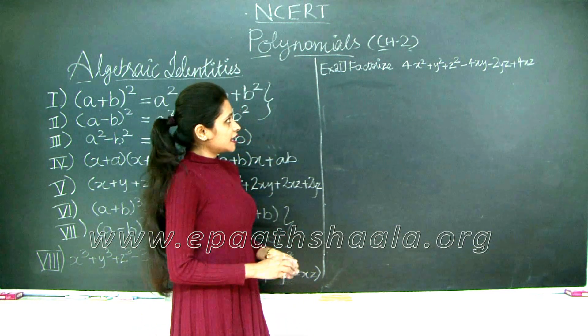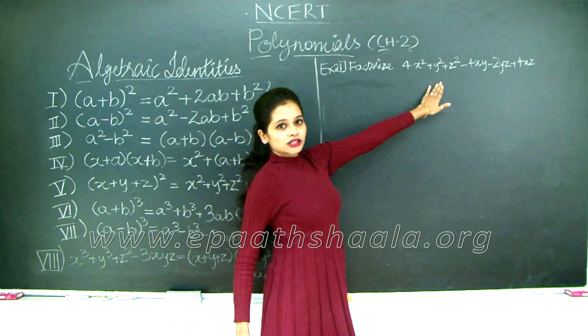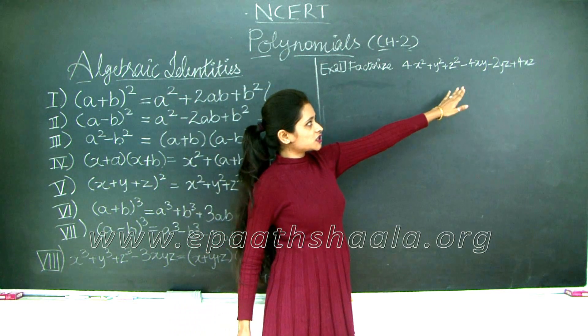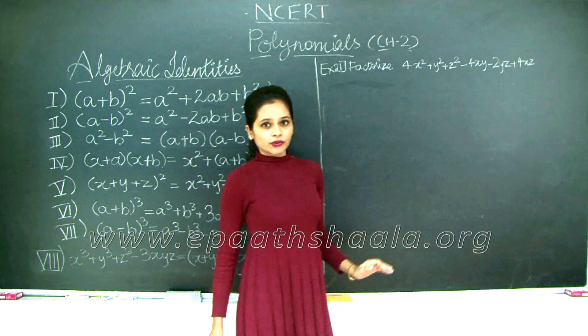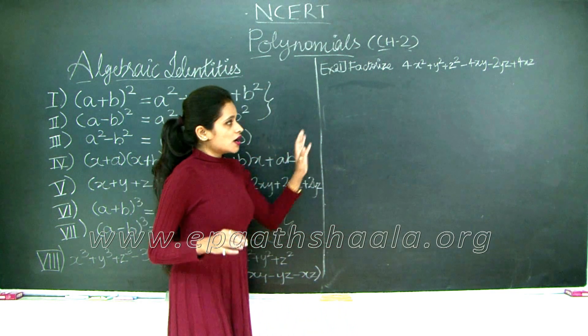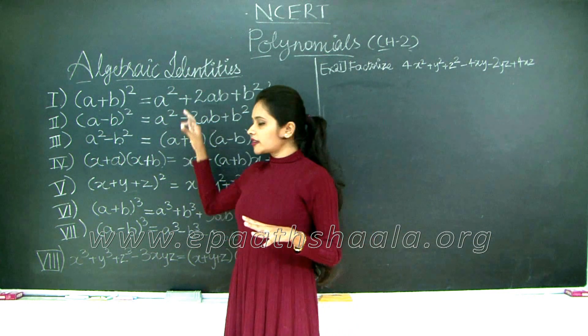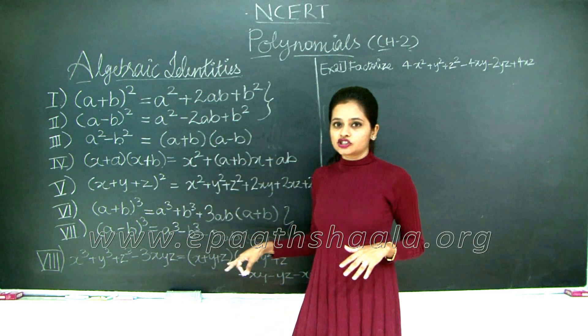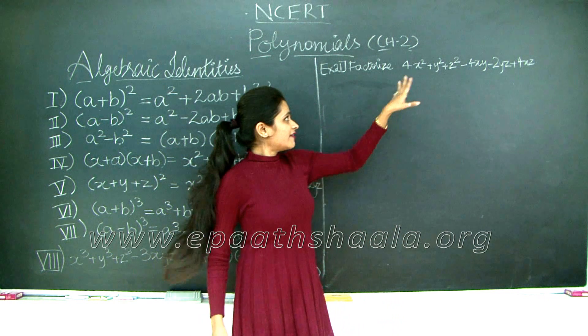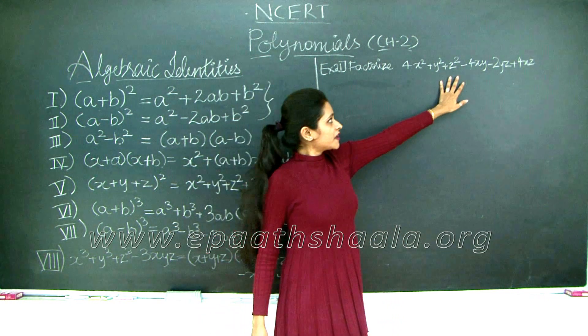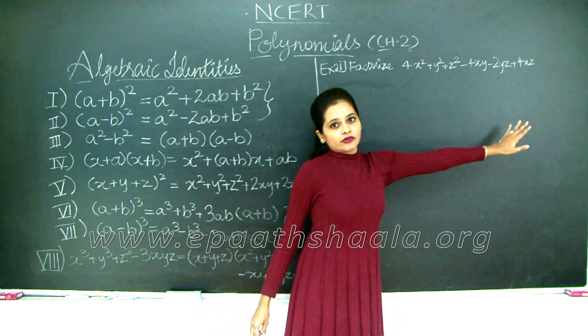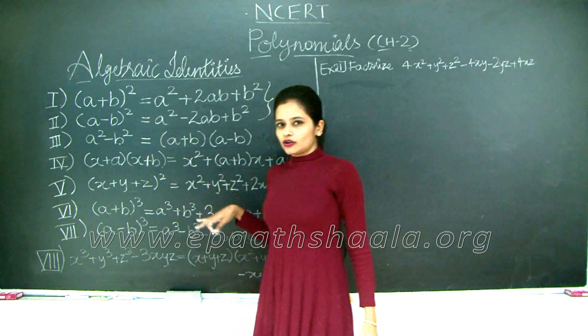We need to factorize this term: 4x square plus y square plus z square minus 4xy minus 2yz plus 4xz. I'm going to take a look at this sum and try to understand whether it is referring to any of the algebraic identities. We have x square, y square, z square and xy, yz, xz, right?